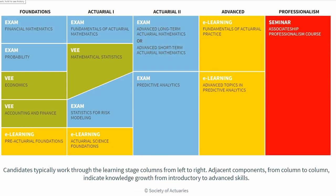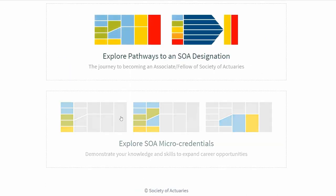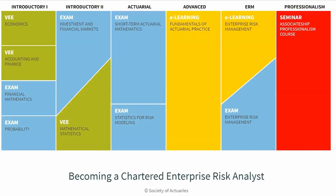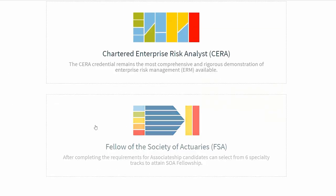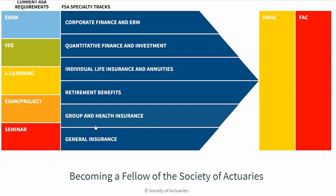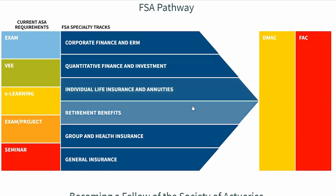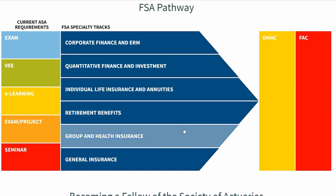To earn the CERA, you need three VEE credits, six exams, two courses, and an APC seminar — a similar workload to the ASA but with a few different exams and modules. Unlike the CAS, which has one track to fellowship, the SOA has as many as six different specialty tracks: Corporate Finance and ERM, Quantitative Finance and Investment, Individual Life Insurance and Annuities, Retirement Benefits, Group and Health Insurance, and General Insurance.